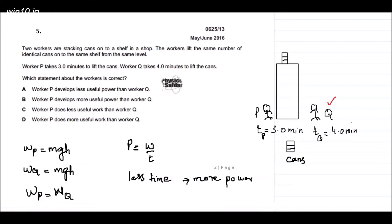This is question number five, from the May/June 2016 series. The question is: two workers are stacking canes onto a shelf in a shop. Both workers lift the same number of identical canes onto the same shelf from the same level. Worker P takes 3.0 minutes; worker Q takes 4.0 minutes. Which statement about the workers is correct? Both workers are doing the same task, stacking canes onto the shelf up to the same height — the difference is the time taken.